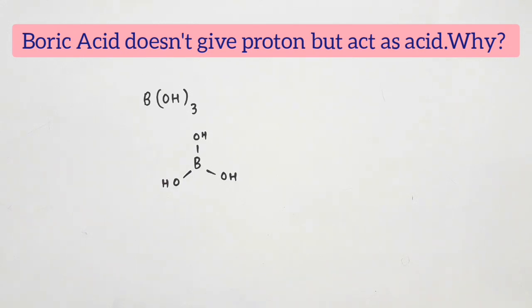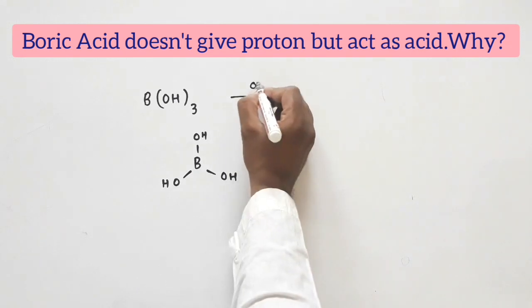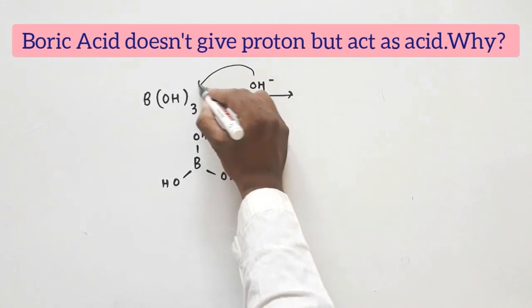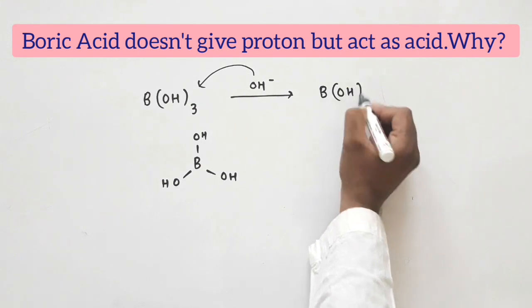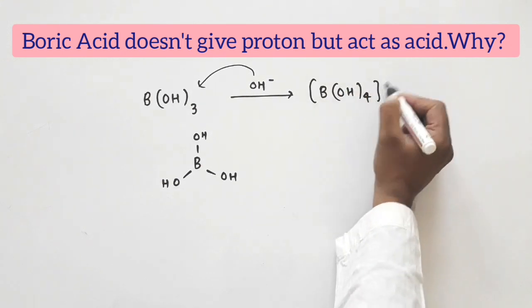Boric acid is also a type of insecticide. It accepts OH⁻ ion and forms [B(OH)₄]⁻ ion.